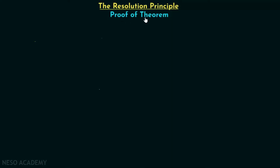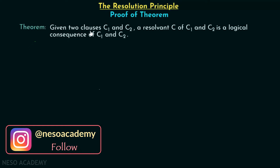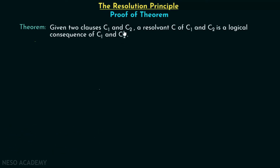In this presentation, we will see the proof of the theorem which we have seen in the previous lecture. The theorem states: given two clauses C1 and C2, a resolvent C of C1 and C2 is a logical consequence of C1 and C2. We have to prove this.